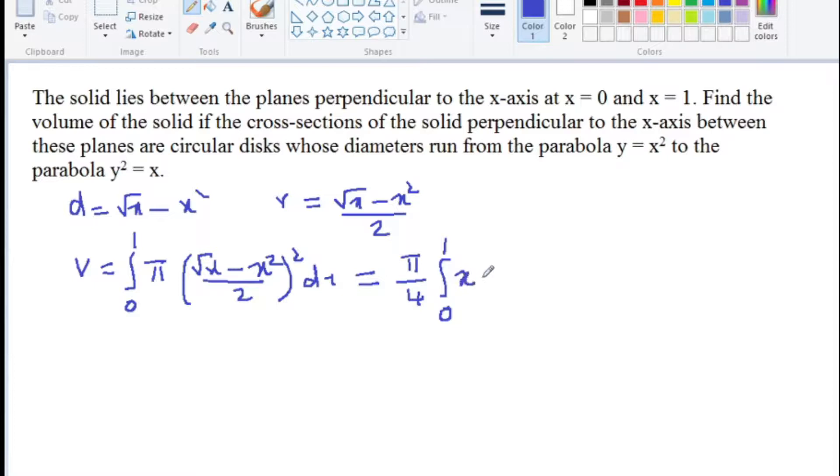Integral of x minus 2 root x times x square, that is, x raise to 5 by 2, plus x to the fourth.